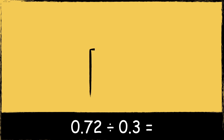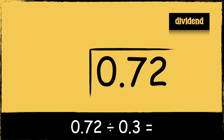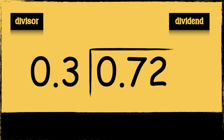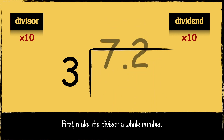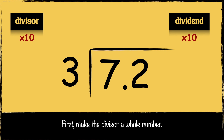First we need to draw our bus stop. We put the number that we are dividing — the dividend — inside the bus stop, and we put the number that we're dividing it by — the divisor — next to the bus stop. If I multiply the divisor to make it a whole number, the process will be easier. I can do that by multiplying the divisor by 10, so 0.3 times 10 is 3. I also need to multiply the dividend by 10, so 0.72 times 10 is 7.2. I can now divide the decimal by a whole number, which will make my calculation easier.